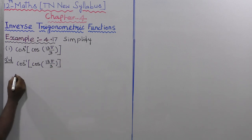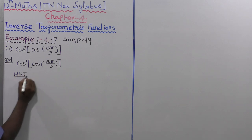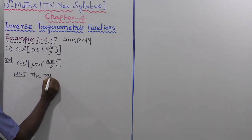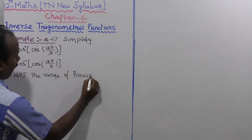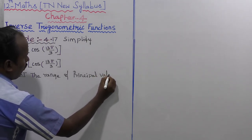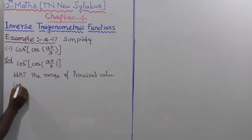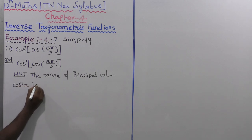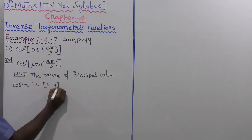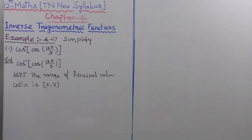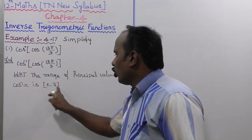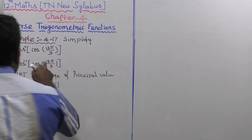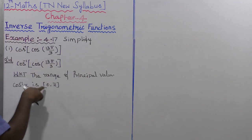We know that the range of the principal value of cos⁻¹(x) is the closed interval [0, π]. So 13π/3 — this is not in the interval [0, π].